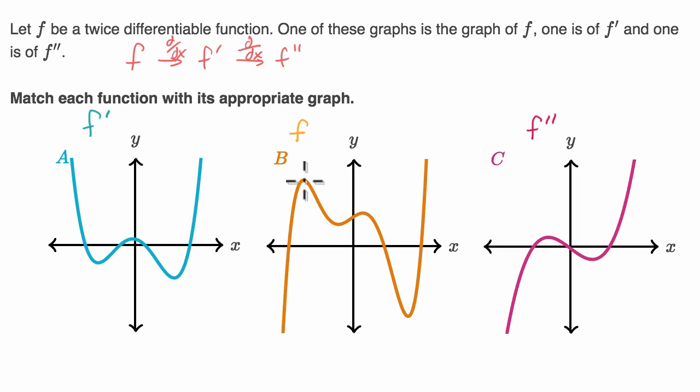I have a slope of zero, a slope of a tangent line of zero right over there. I have a slope of zero right over there. I have a slope of zero right over there. I have a slope of zero, a horizontal tangent line, right over there.